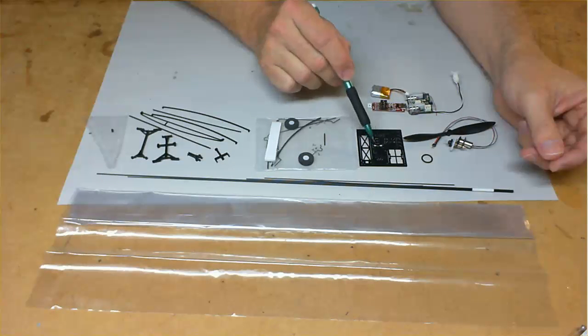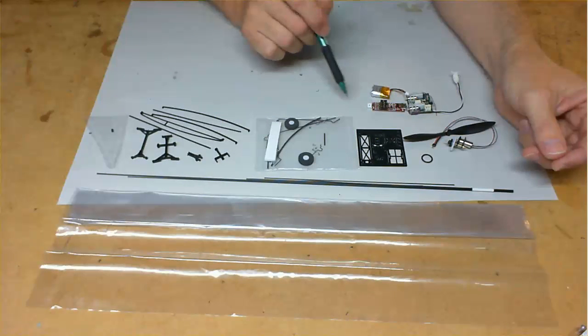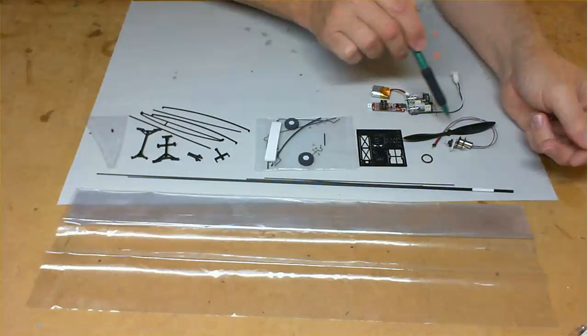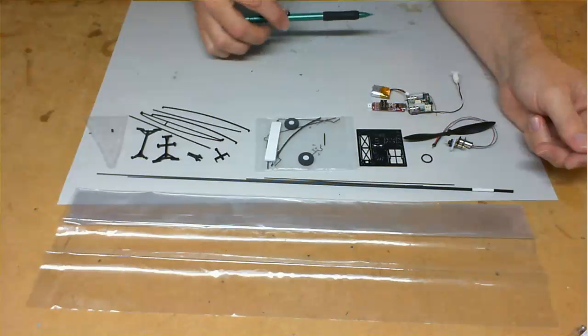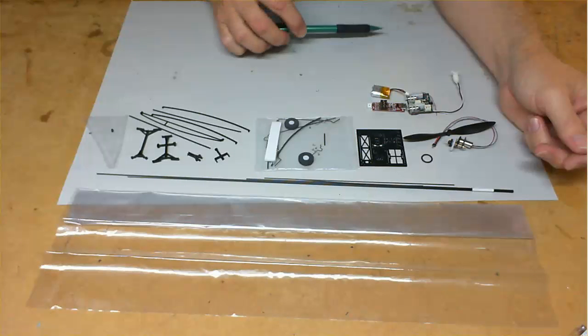We've got the plastic parts, the templates here. And the motor, propeller combination. Okay, so I might just give you a bit of a close-up look at a few of these parts.